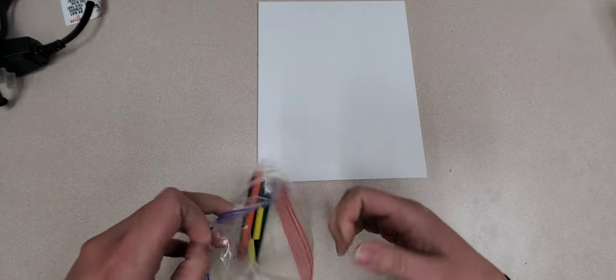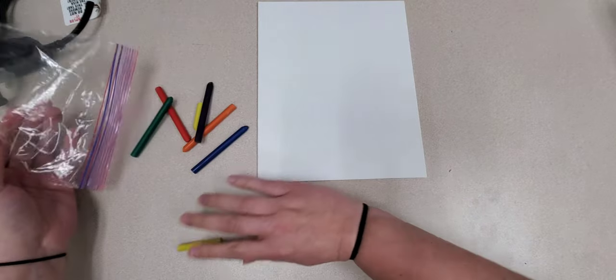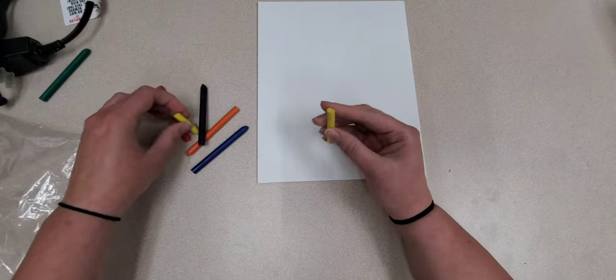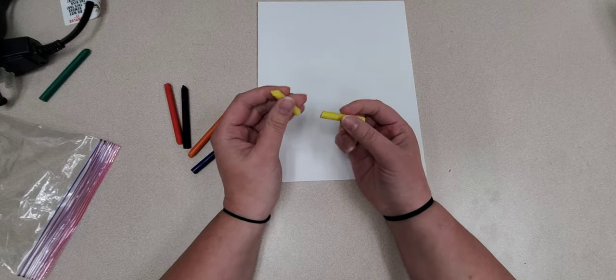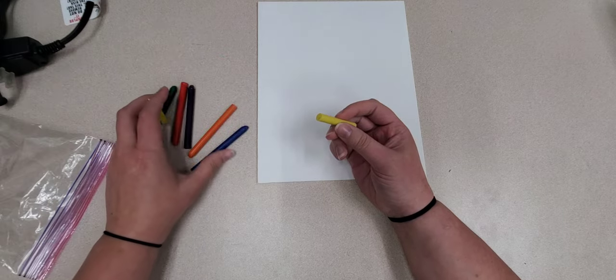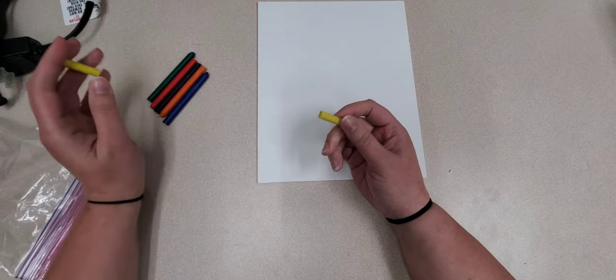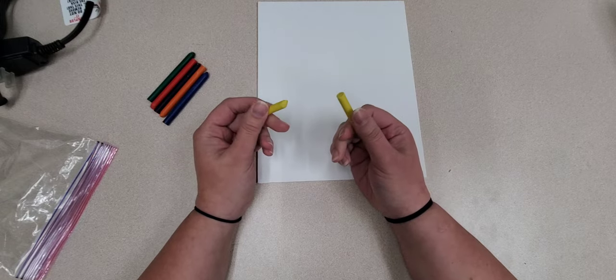Alright, so the first thing we're going to do is get all of our supplies out. Now, you will notice that my yellow crayon is in two pieces. These are melting crayons, so these are a little bit easier to snap than traditional crayons. You can use traditional crayons. There's nothing really special about these. They just take a lower temperature to warm up.